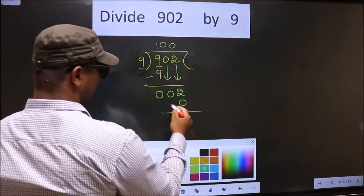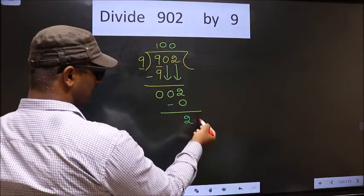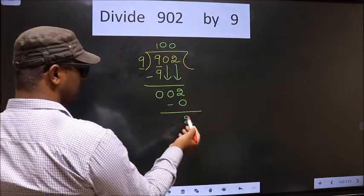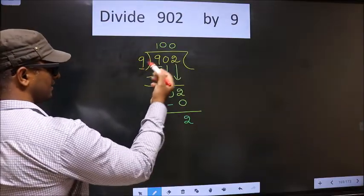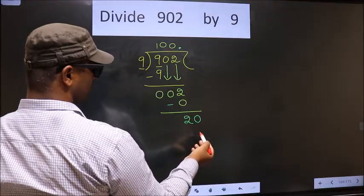Now you subtract. 2 minus 0, 2. Over here, we did not bring any number down. And 2 is smaller than 9. So now we can put a dot. Take 0 here. So 20.